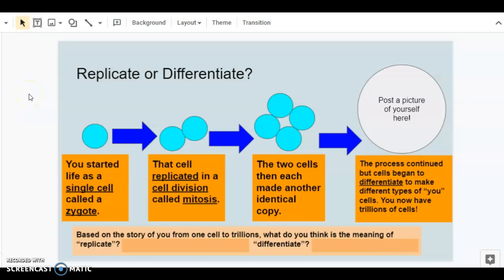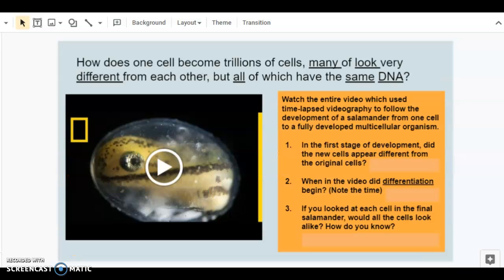On the next slide we have a video that is a fascinating video to watch. How does one cell become trillions, many looking very different from each other, but all having the same DNA? Well, this video is going to show you that process in action. So go ahead and pause the video where you're listening to me and watch this video, and as you watch make sure to answer the questions that you see on the slide.